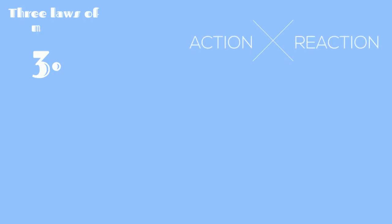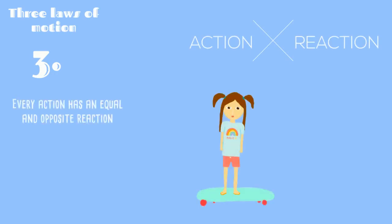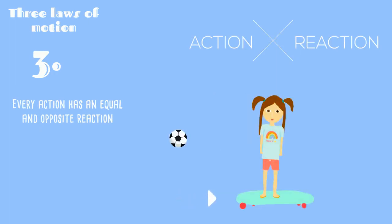Newton's third law of motion: every action has an equal and opposite reaction. Imagine you stand on a skateboard and you throw a ball to the front — you will recoil and move backward with the skateboard.